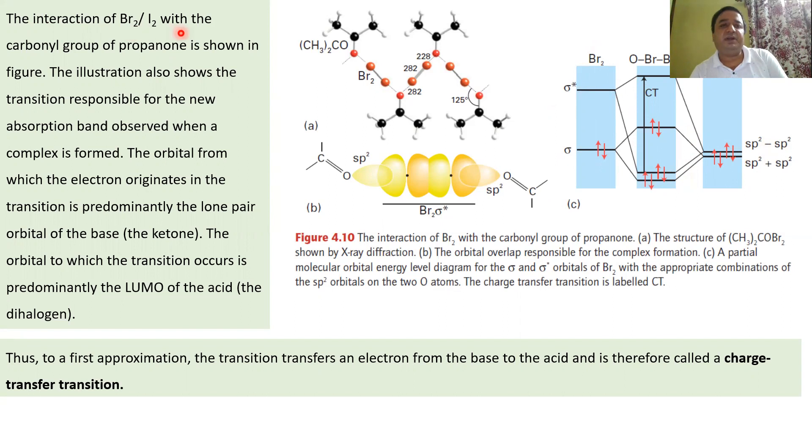So, we can see over here, the interaction of the bromine-iodine with the carbonyl group of propanone is shown in the figure, as we have seen. And this particular illustration shows the transition responsible for the absorption band observed when the complex is formed. So, this is the complex that is formed, that is with the solvent and iodine. And this is the transition that has been taking place. The orbital in which the transition occurs is predominantly the LUMO of the acid. That means the dihalogen over here, which is accepting, the Lewis acid. And the ketone is basically the Lewis base. So, here, this particular type of transition is our charge transfer transition.